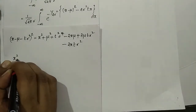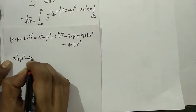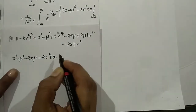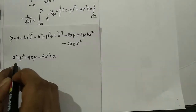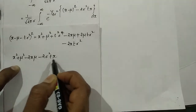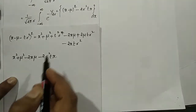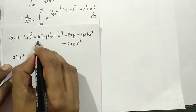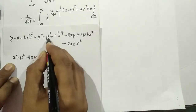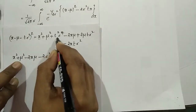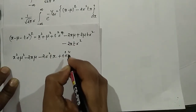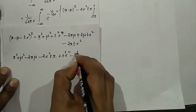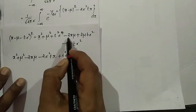This simplifies to x squared plus mu squared minus 2x mu minus 2 sigma squared tx. Now, if you want to add and subtract terms: x squared plus mu squared plus t squared sigma to the 4th, then we add and subtract minus 2x mu.